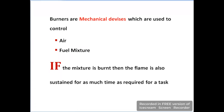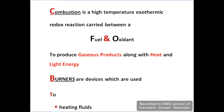Burners are mechanical devices which are used to control the air and fuel mixture. When the mixture is burnt, the flame is sustained till getting our required task. Due to the burner, we get combustion. Combustion is a high temperature exothermic redox reaction which is carried out between fuel and oxidants. As a result of this reaction, we get gaseous products along with heat and light energy.